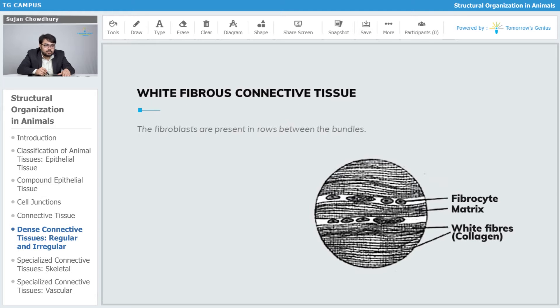The fibroblasts are present in rows between the bundles. Fibroblasts are observed in rows between the bundle-like structures of white fibrous connective tissue.